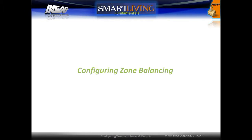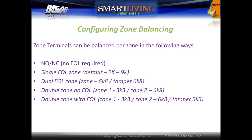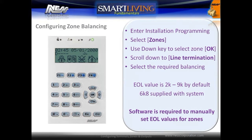Zone terminals can be balanced individually per zone as either: normally open, normally closed with no end-of-line resistor required, single end-of-line, dual end-of-line to provide a tamper circuit, double zone with no end-of-line, or a double zone with end-of-line. By default, zones are configured as single end-of-line and will recognize a value between 2k and 9k.